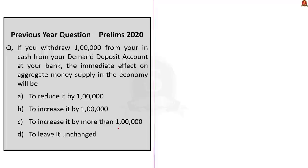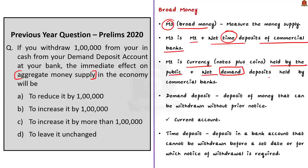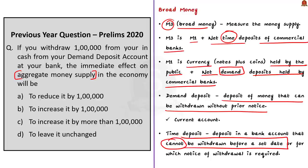This is a direct question from NCERTs. To solve it, we need to understand M3, which stands for broad money — commonly used to measure money supply. M3 = M1 plus net time deposits of commercial banks. M1 stands for currency, which includes notes plus coins held by the public, plus net demand deposits held by commercial banks. A demand deposit is a deposit of money that can be withdrawn without prior notice — for example, a current account deposit. A time deposit is a deposit that cannot be withdrawn before a set date.